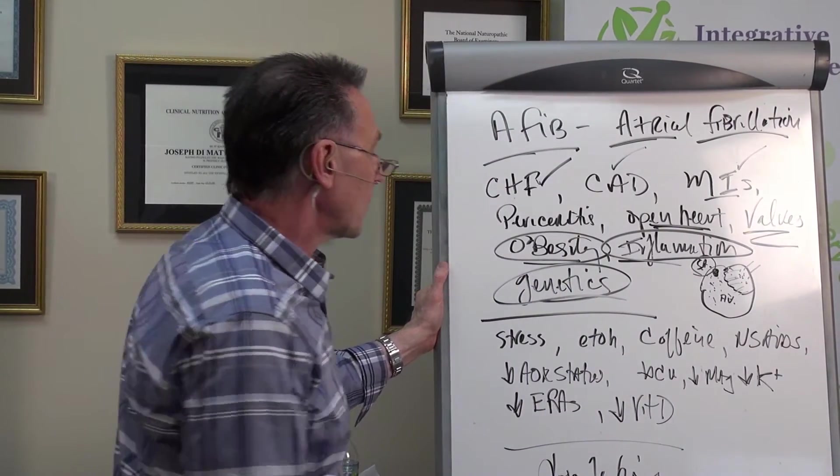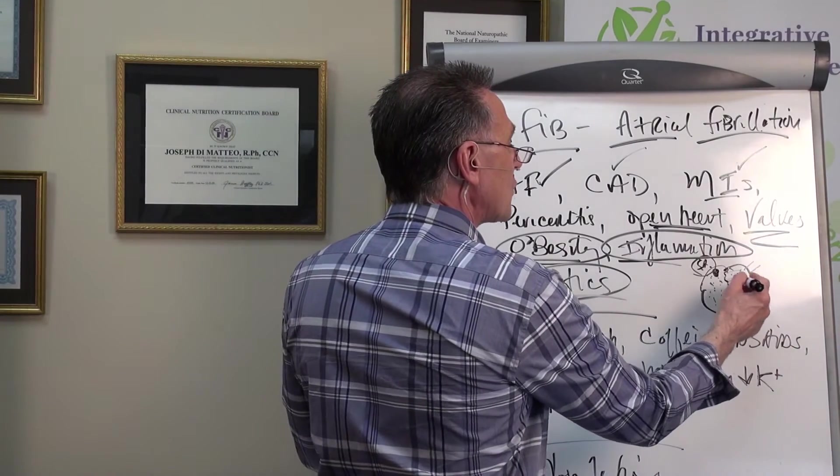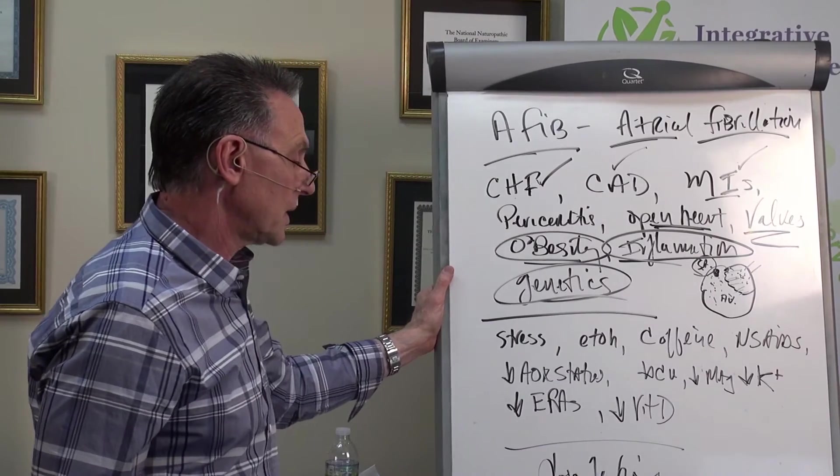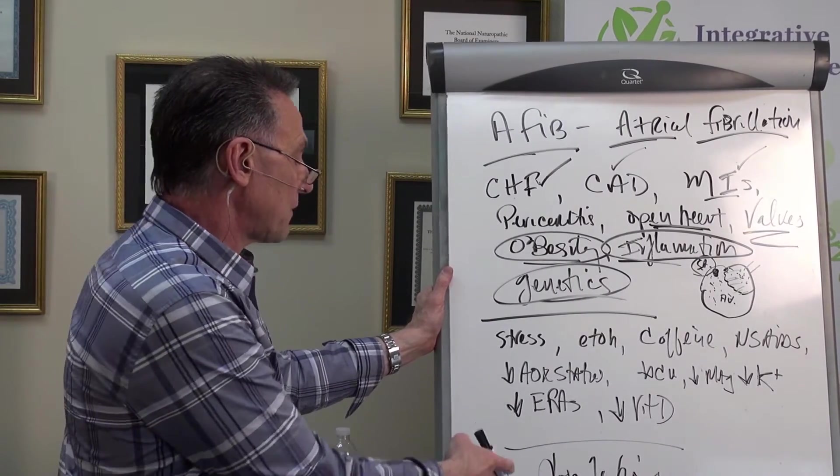You're just an inflamed individual. You eat poorly. You drink alcohol. You eat too much sugar. You just do not take care of yourself. You're under a ton of stress. You're producing a ton of inflammation, systemic inflammation. That puts you at a higher risk. There are certainly some genetic components to this. I don't think there's any question.